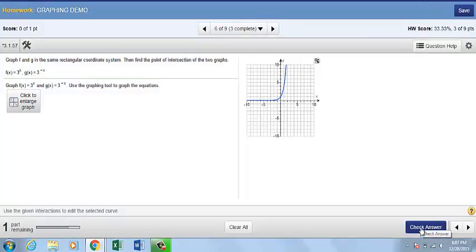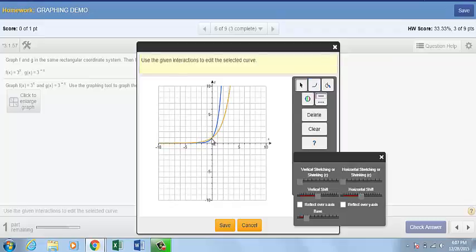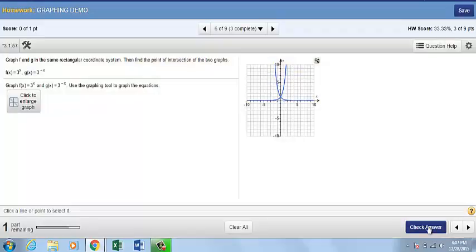And you will need to use the options to shrink or stretch the graph to match this particular function. f of x equals 3 to the x power. Remember, before we click to check our work, that we also need to show 3 to the negative x. So again, choose your exponential icon. Plot that. Now reflect that graph over the y-axis. And again, shrink or stretch your graph as necessary.